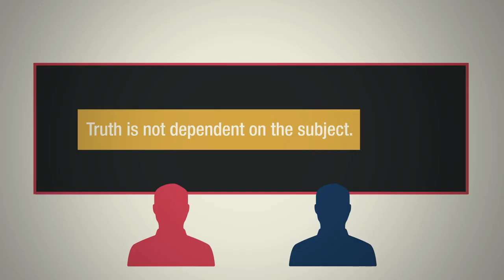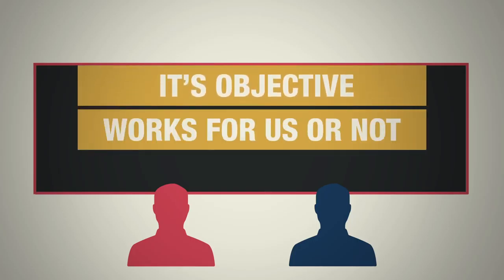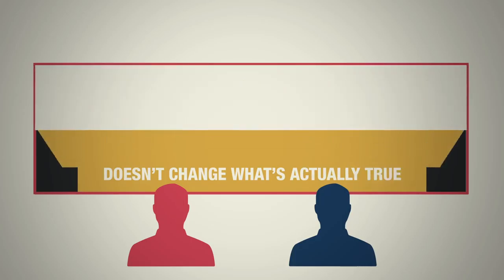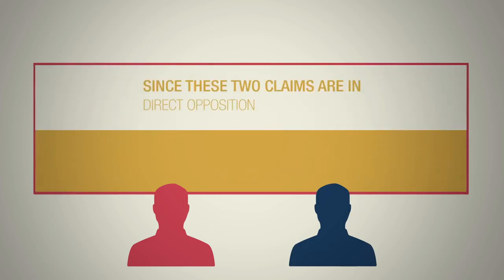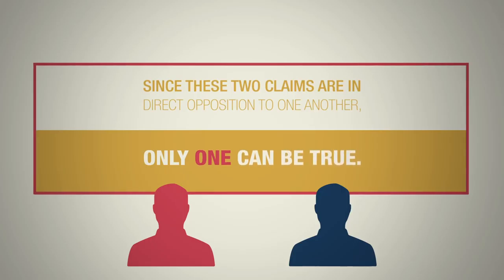Second, truth is not dependent on the subject, that is, you or me. It's objective. So whether it works for us or not doesn't change what's actually true. Third, since these two claims are in direct opposition to one another, only one can be true.